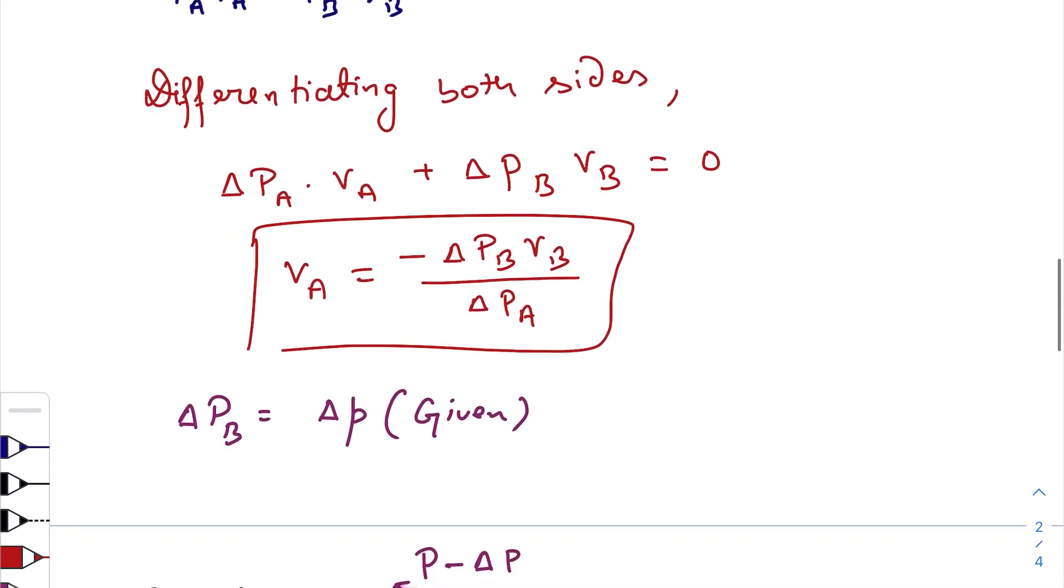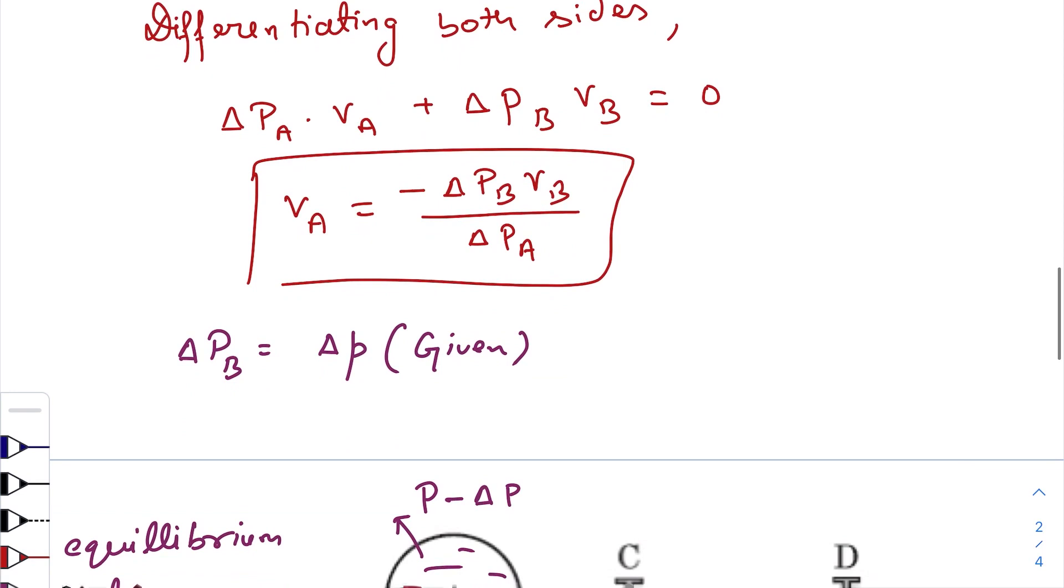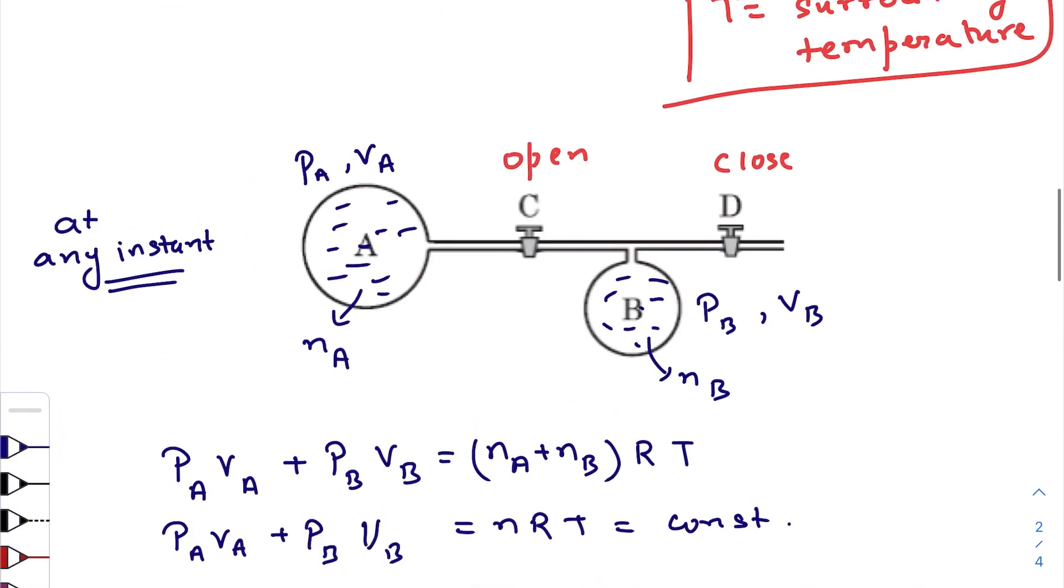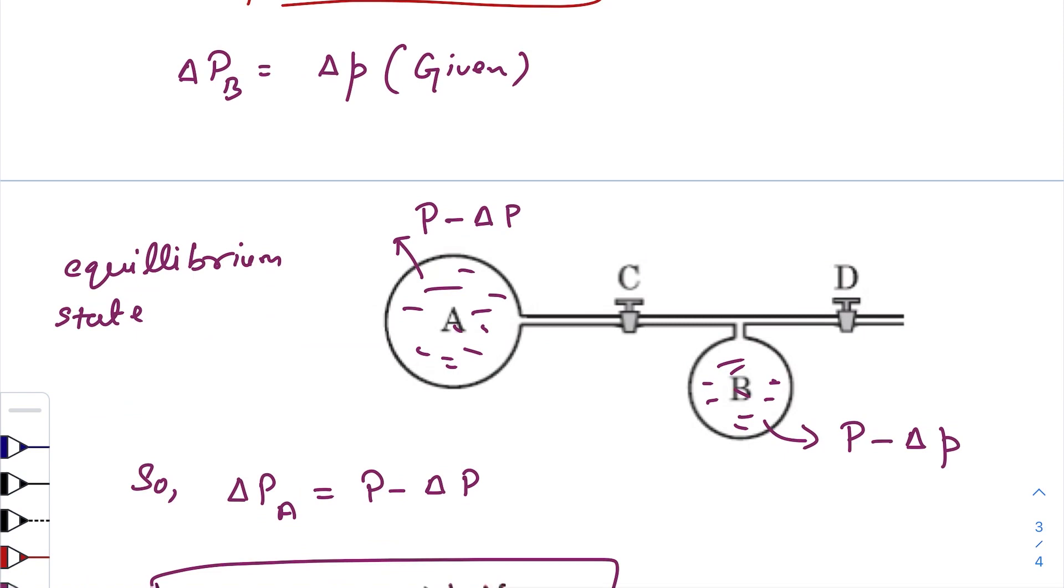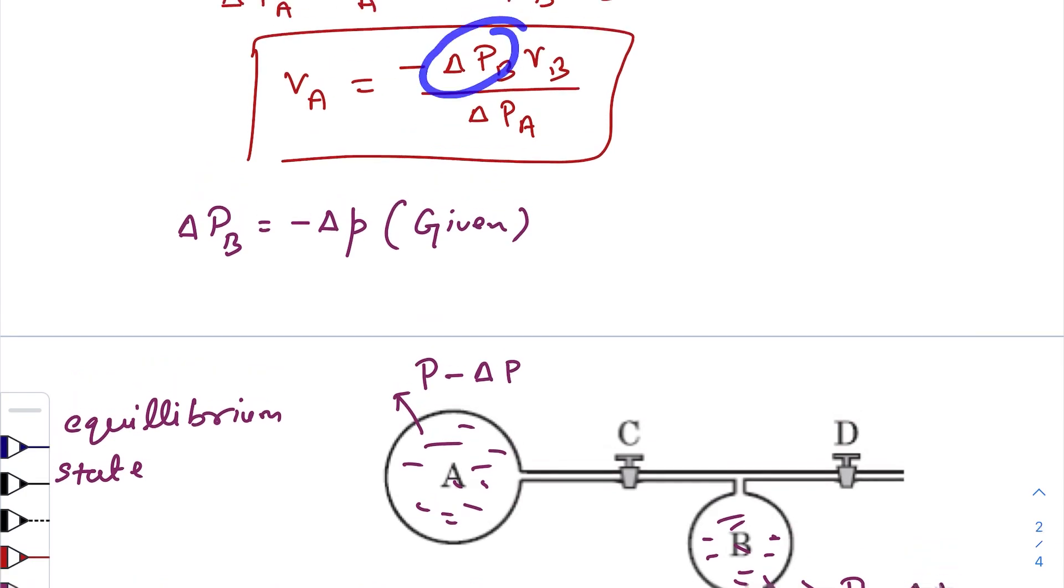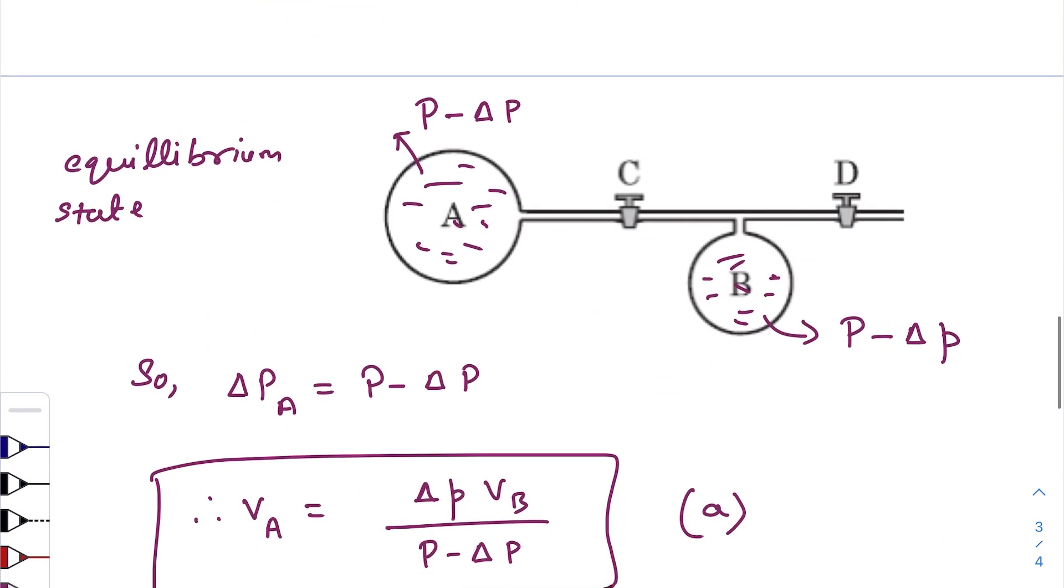When equilibrium condition is reached, the change in pressure of flask B is ΔP. Of course there should be a negative sign here also because there is a drop of pressure. So ΔPB is minus ΔP. Just put the value here. And when equilibrium state is reached, the pressure in both the flasks will be same.